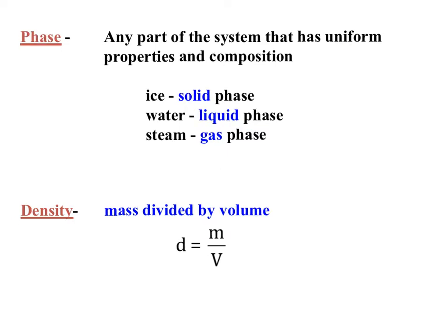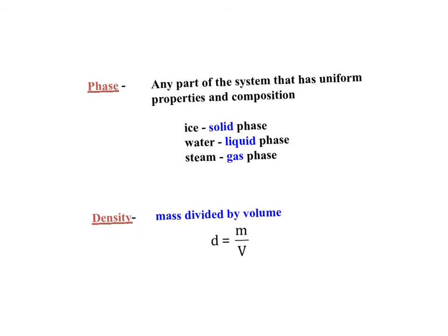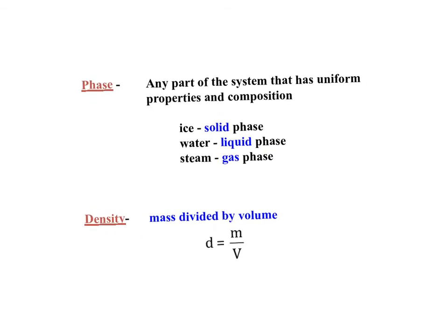As part of our review, we also cover phases and density. With phases, you can have the solid phase, liquid phase, or gas phase of any substance — for H₂O, we call these ice, liquid water, and steam. A phase is any part of the system that has uniform properties and composition.